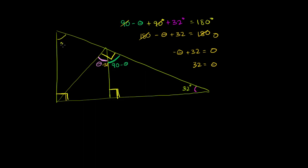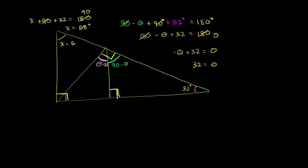Let me call this angle x. If we call that angle x, we would have x plus 90 plus 32 is going to be equal to 180 degrees — I'm looking at the biggest triangle in the diagram. If you subtract 90 from both sides, you get x plus 32 is equal to 90. Subtract 32 from both sides, you get x is equal to 58 degrees.